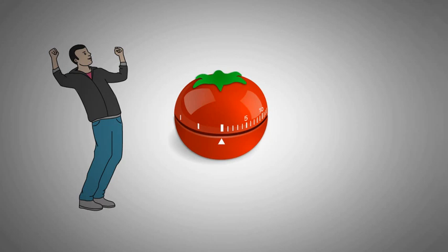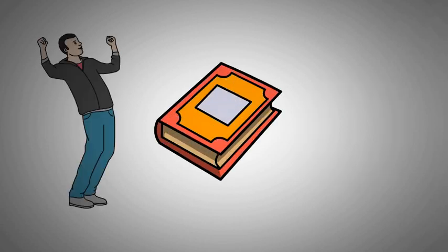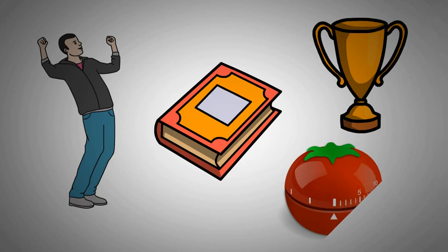John loved the Pomodoro Technique so much that he tried it with other types of tasks as well. He applied to tasks that didn't have a clear finishing line because after the 25 minutes he could evaluate if he should close the task or go for another 25 minutes. I am happy to tell you that John finished his book and it was a success. He is already writing the next one and still uses the Pomodoro Technique.